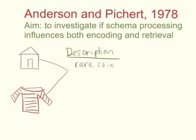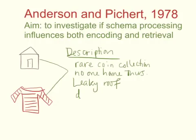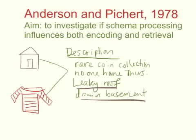Some of those details include: a rare coin collection, no one home on Thursdays, a leaky roof, and a damp basement. The damp basement and leaky roof fit more with the house buyer schema, while no one home on Thursdays and the rare coin collection fit more with the schema of a burglar. So if you were given the burglar schema, you'd likely remember more details like the rare coin collection, whereas the leaky roof would be more important to someone with the house buyer schema.